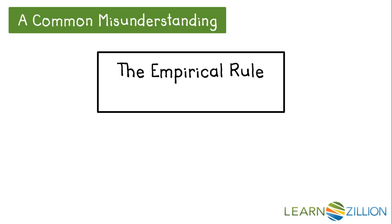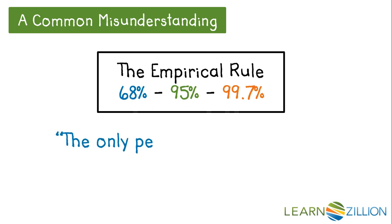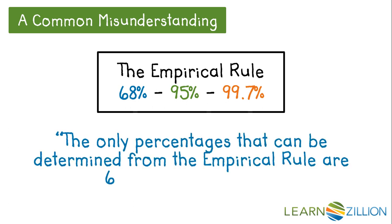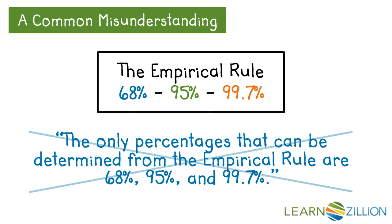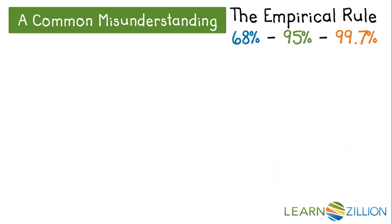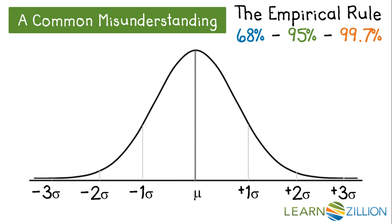Now when looking at the empirical rule, you can see that it explicitly states 68%, 95%, and 99.7%. But a common misunderstanding is to think that the only percentages that can be determined from the empirical rule are those three. That is not true. The empirical rule is not just limited to those three percentages, because you can apply it to derive other percentages.